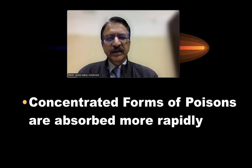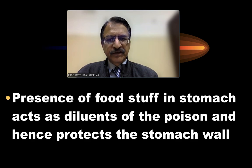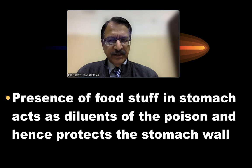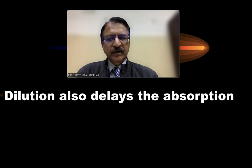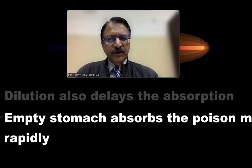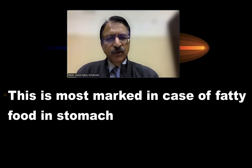The concentration of poison is the next important factor — concentrated forms are absorbed more rapidly. Regarding the condition of the stomach, the presence of food acts as a diluent, protects the stomach wall, and delays absorption. An empty stomach absorbs poison most rapidly, and this effect is most marked with fatty food in the stomach.